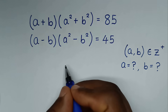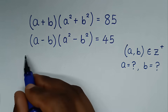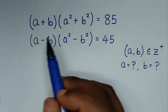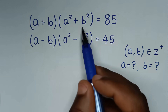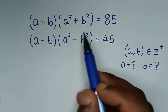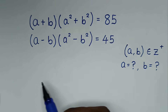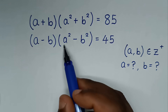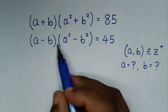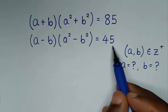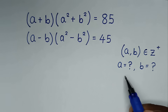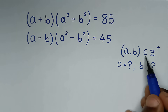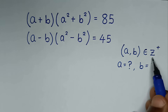Hello, you are welcome to solve this math problem: (a + b)(a² + b²) = 85, and (a - b)(a² - b²) = 45. Find the values of a and b, such that (a, b) is an element of the positive integers.